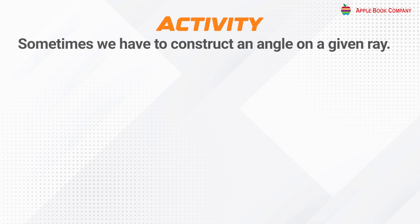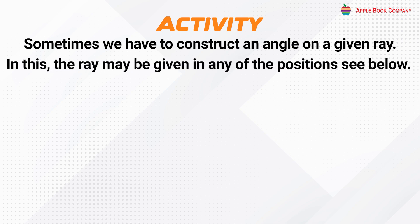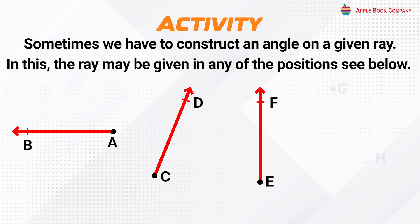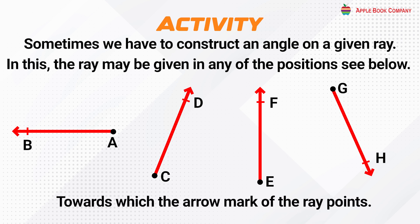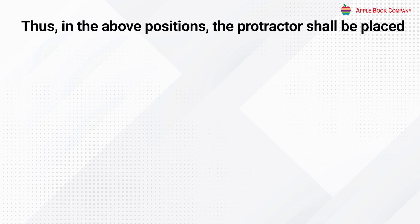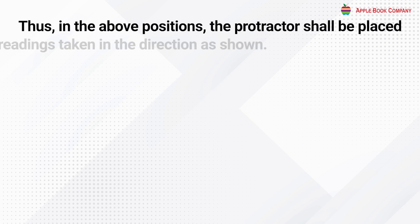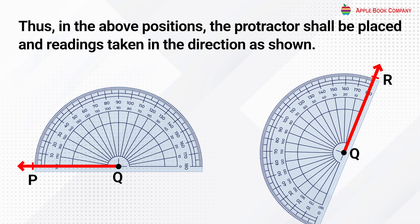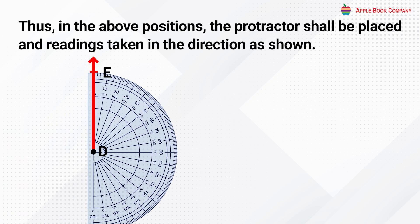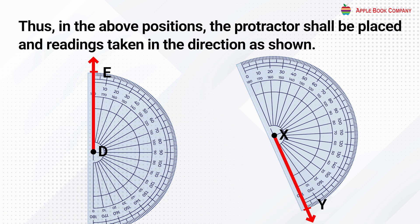Activity: sometimes we have to construct an angle on a given ray, where the ray may be in any position — such as AB, CD, EF, or GH. For this, remember two things: position the protractor with its central point on the initial point of the ray, and always read the protractor from the side towards which the arrow of the ray points. In the above positions, readings are taken from P, R, E, and Y respectively.